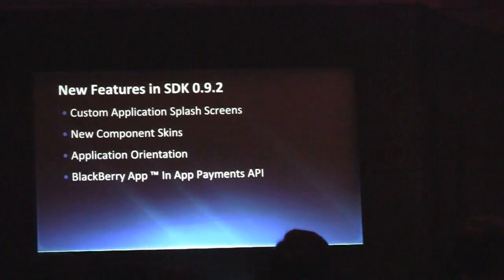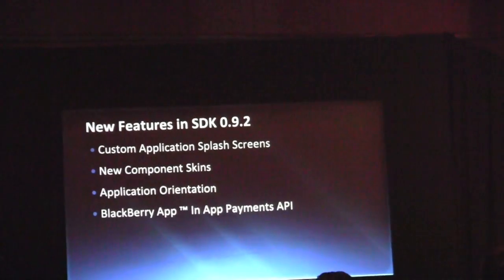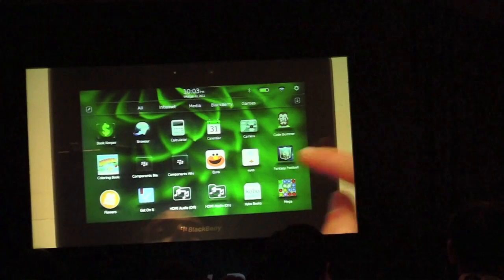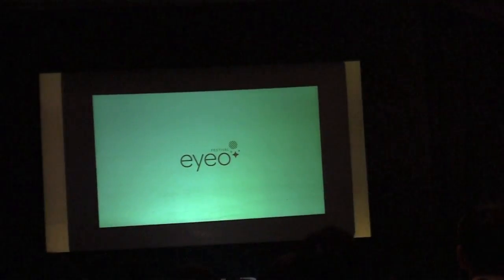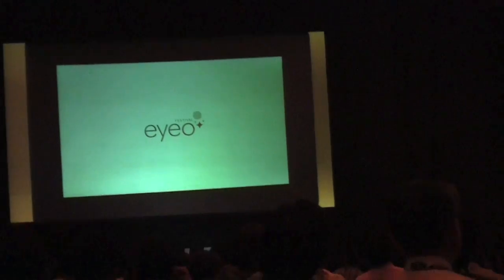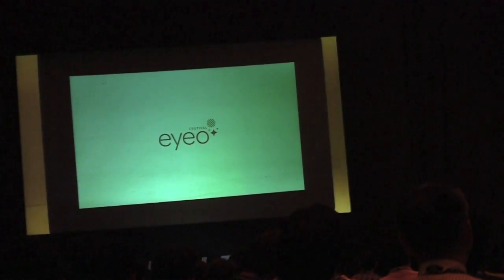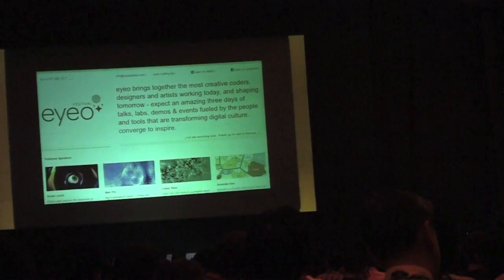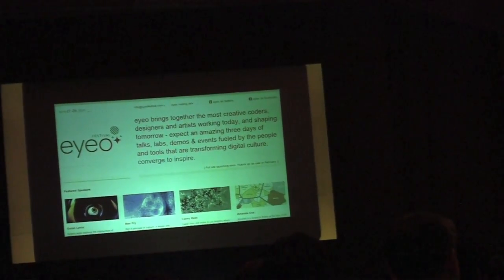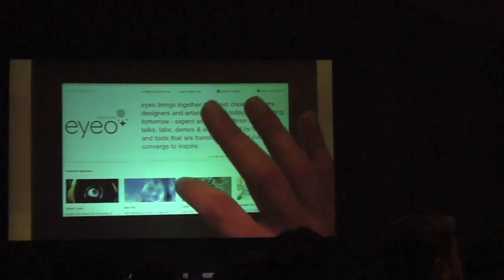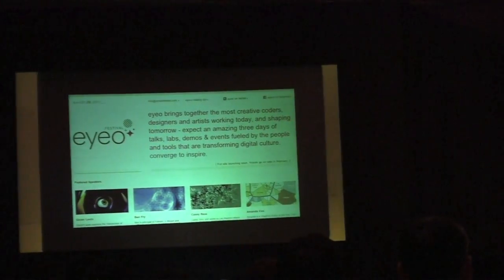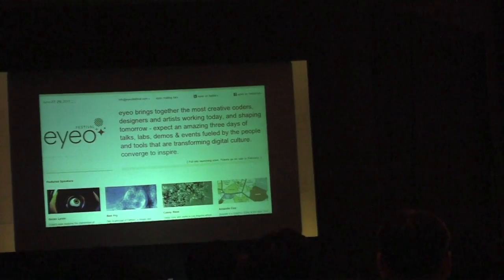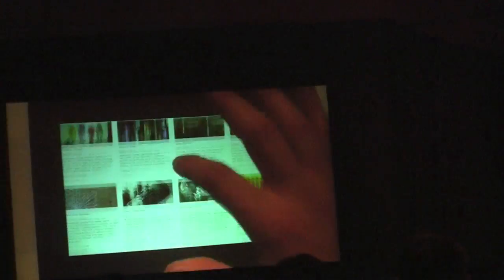One application we have here is developed by IO Festival, a festival happening in June in Minneapolis. You can see it has a custom splash screen, which provides an extra level of polish to your application. The great thing is you can embed that splash screen inside your application so the transition is seamless — all the content was loaded in the background, and the splash screen was removed once all the content was downloaded and ready to be seen.